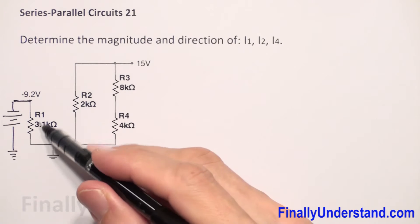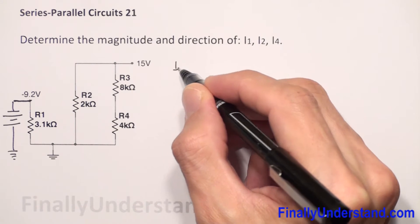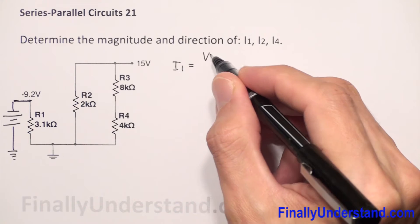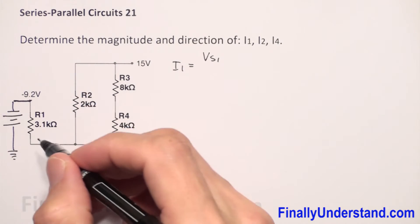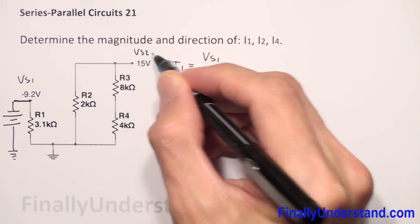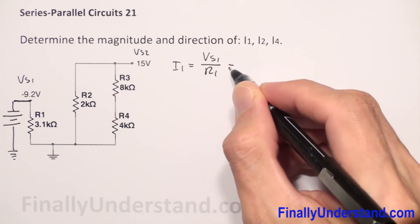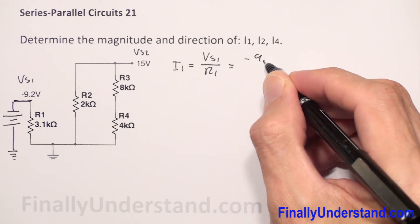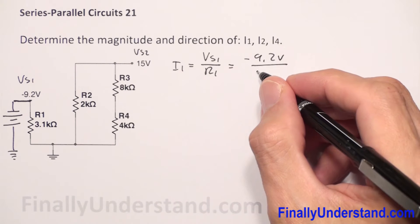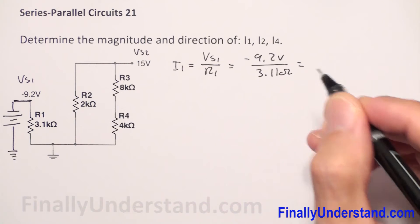If you want to find the current which goes through this resistor, simply use Ohm's Law and write I1 is equal to voltage source 1 divided by R1. Voltage source 1 is negative 9.2 volts divided by R1, which is equal to 3.1 kilo ohms.